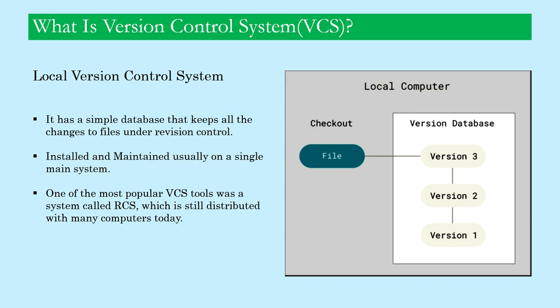To deal with this issue, programmers long ago developed local version control systems that had a simple database keeping all the changes to files under version control. This version control system is installed and maintained usually on a single main system, and one of the most popular tools was a system called RCS, which is still distributed with many computers today.